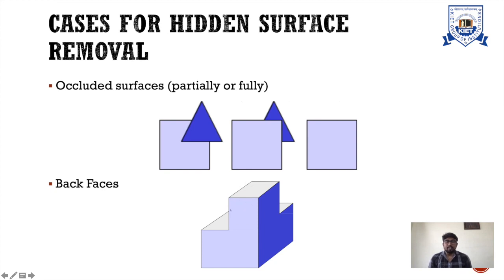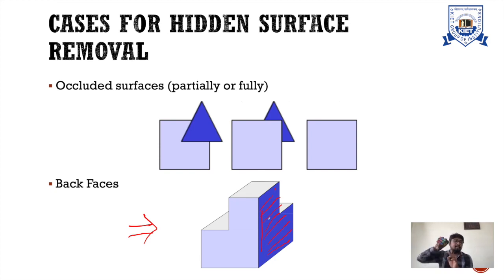If we keep the square in front of the triangle, only a few parts of the triangle are visible; the part behind the square is not visible. If we completely keep one object behind the square, that object completely disappears. The second case is back face — we have to detect what the back faces are. From the front, we are seeing this object; the surface behind this object is the back face, which you are not able to see.